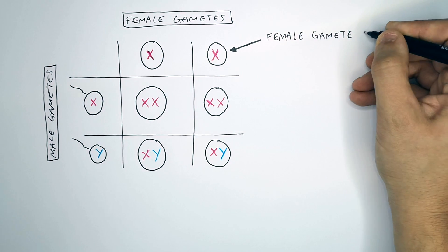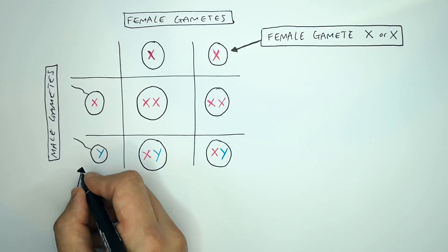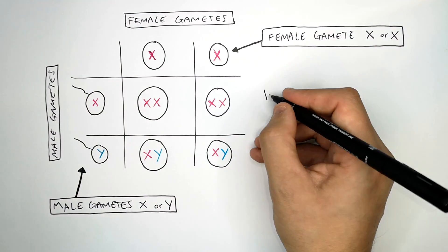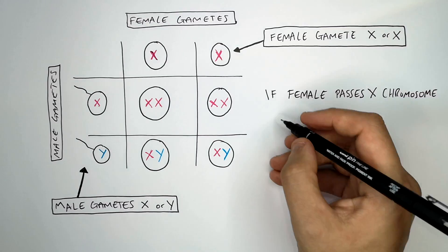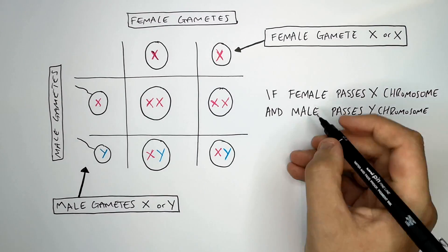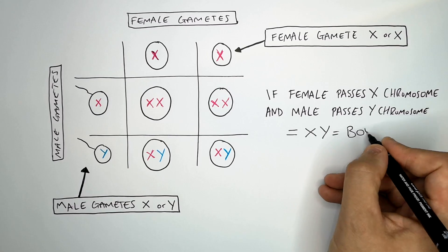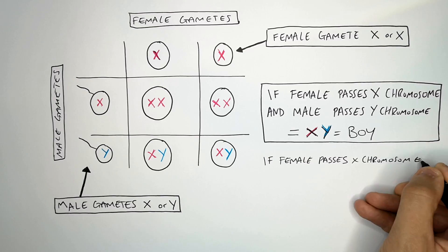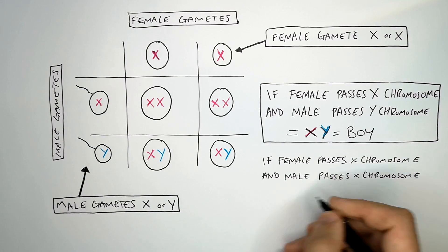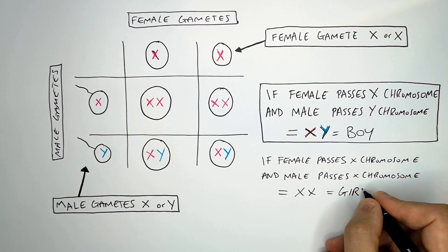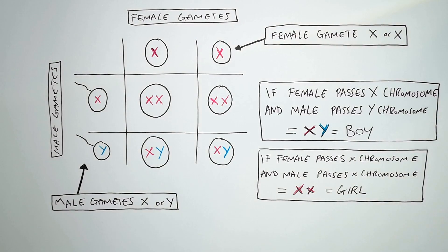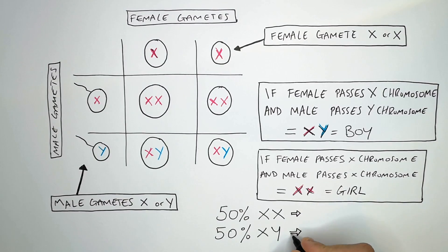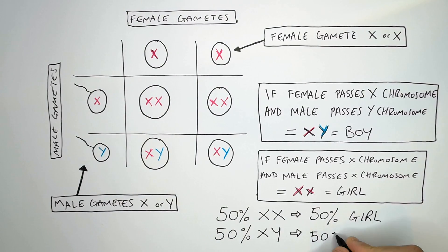The female gametes can be X or X, whereas the male gametes can be X or Y. If a female passes on her X chromosome and the male passes on the Y chromosome, that means it's XY, which means it's a boy. However, if the female passes on her X chromosome and the male passes on the X chromosome, that means it's XX and it is a girl. So the percentage chances are 50% XX chance and a 50% chance of XY, meaning a 50% chance of a girl and 50% chance of a boy.